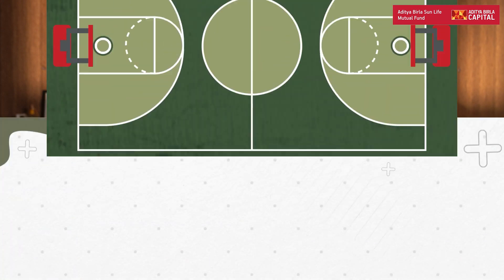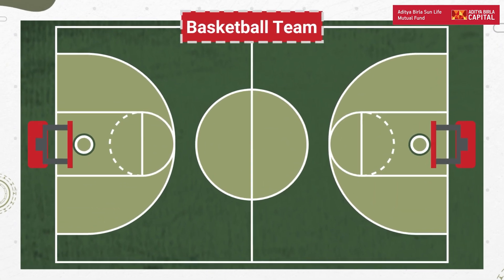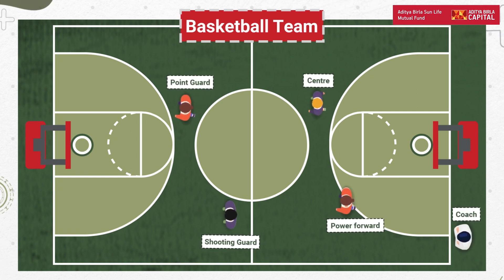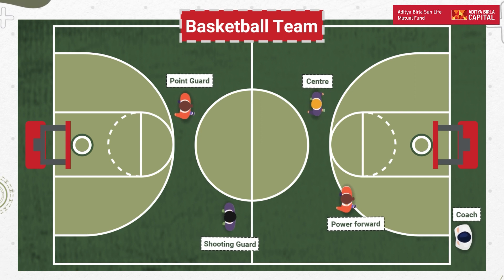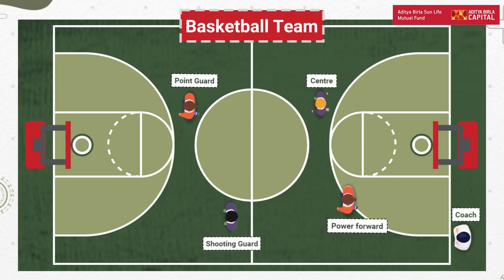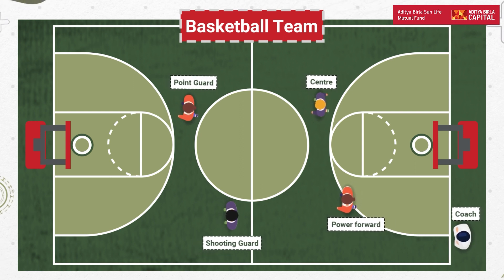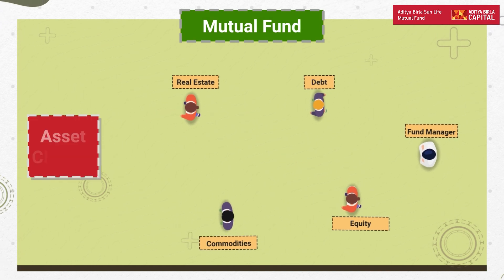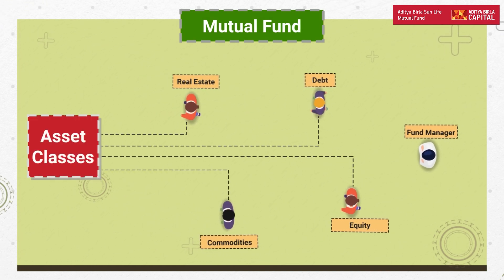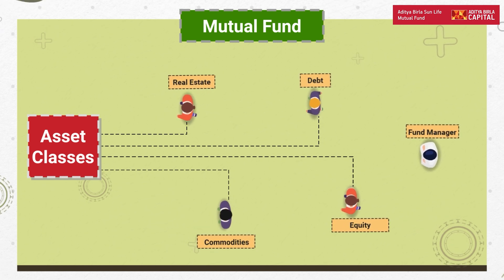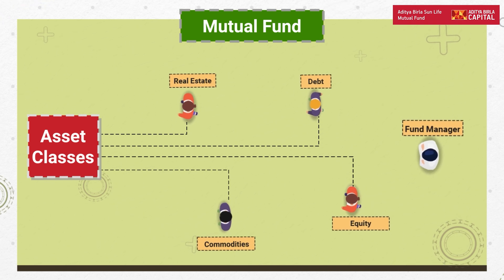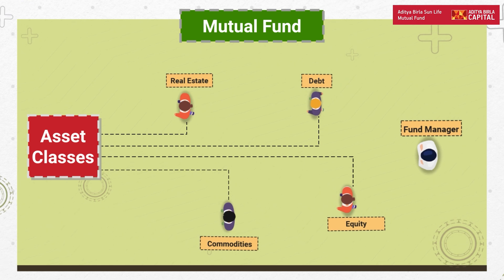Look at it this way. Imagine a professional basketball team. In a professional basketball team, there are different kinds of players who have their own strengths and weaknesses — centre forwards, power forwards, and a shooting guard as well. Similarly, a mutual fund deploys its money into different kinds of stocks or assets so that you get the best of all stocks, not just one single stock. The coach of that professional basketball team is exactly like a fund manager — the coach decides which player is perfect for the match, just as the fund manager decides which investment or asset class is perfect for that market condition.